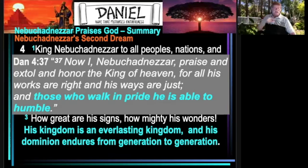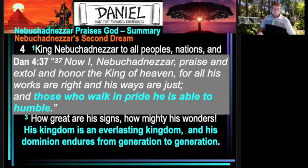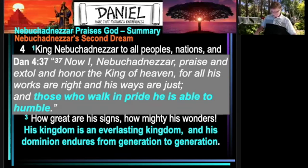It kind of goes in a loop from verse 37 back to verses 1 through 3. In verse 37, who is he referring to? It's obvious — he's referring to himself. He's writing in the first person. There is a person who has been humbled, and he is that person. So with that perspective, let's look at the beginning.